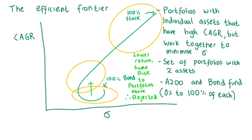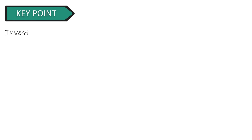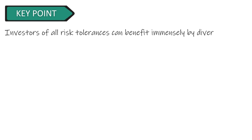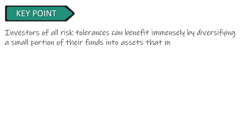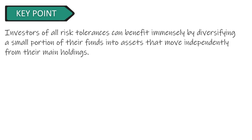The most important finding from this work is that one assumption in investing is that a higher degree of risk means a higher potential return. Conversely, investors who take on a low degree of risk have a low potential return. According to this theory brought forward by Nobel laureate Harry Markowitz, there is an optimal portfolio that could be designed with a perfect balance between risk and return. In other words, even the most risk-seeking investor as well as the most risk-averse investor can both benefit immensely by diversifying into assets that move independently from one another — such as a small allocation to bonds for a risk-seeker or a small allocation into equities for a risk-averse investor.